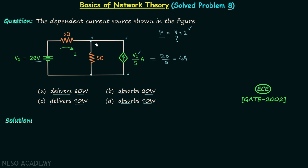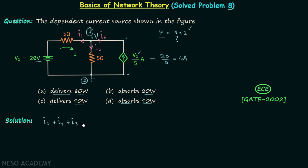I want to find the potential at the relevant nodes using nodal analysis. In this network we have two principal nodes. I will choose the bottom node as the reference node. The top node has potential V, which we want to find. Assuming V is the largest potential, all three currents will leave node 1 — call them I1, I2, and I3. Applying KCL at node 1: I1 + I2 + I3 = 0.